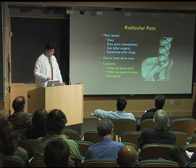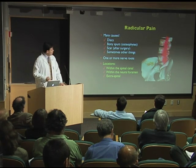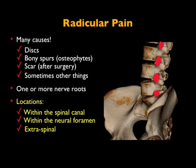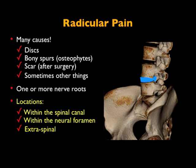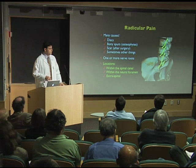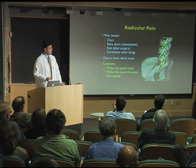You can see the foramina right here. If you have bony spurs, that would narrow one foramen. If you have a disc sticking back, it may contact one or more nerves. If you have a tumor or an infection, you may feel it there. And it's not just in the spinal canal — remember, those nerves come out. If you have a tumor touching those two nerves, you're going to get sciatica. So it's not just a spinal syndrome.